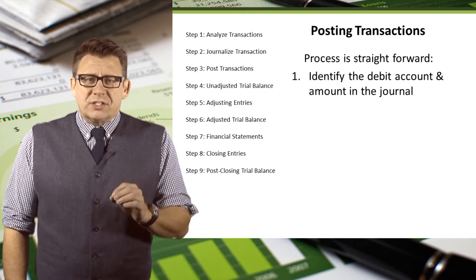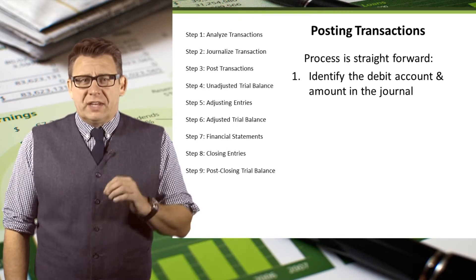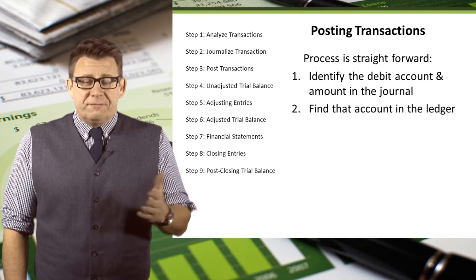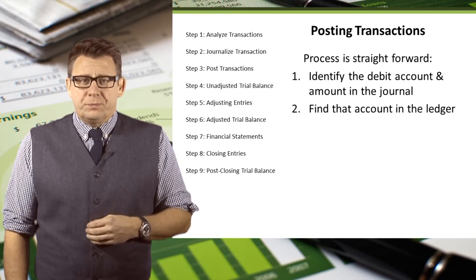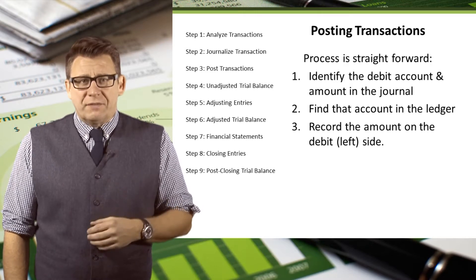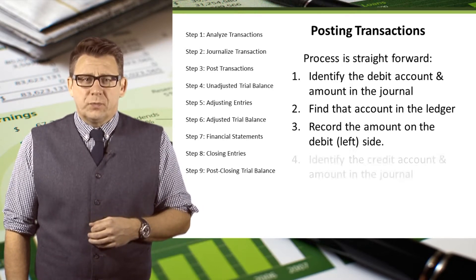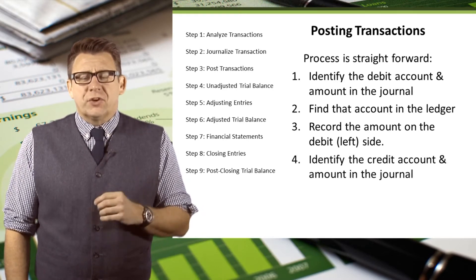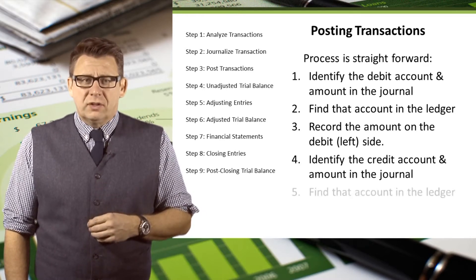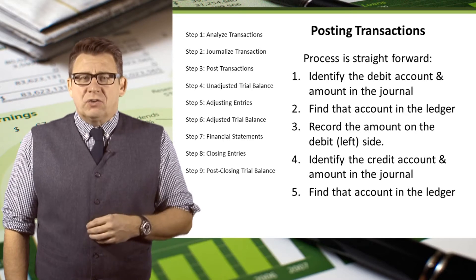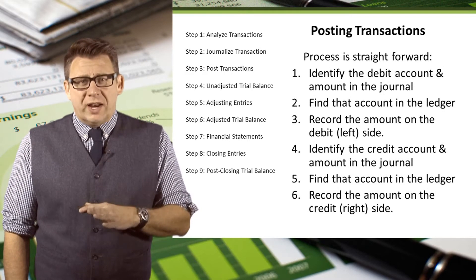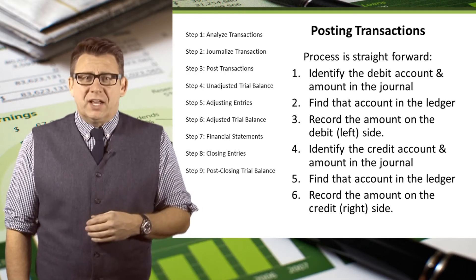It starts with identifying the debit account and the amount from the journal. Then find that account in the ledger. Record the amount as a debit, or on the left side of the account. Then do the same thing for the credit account: identify the credit account and amount, find that account in the ledger, and finally record the amount as a credit, or on the right side of the account.